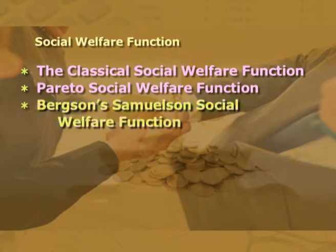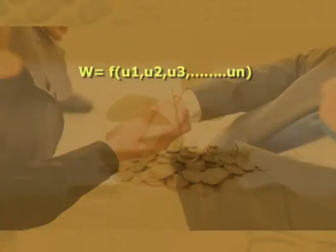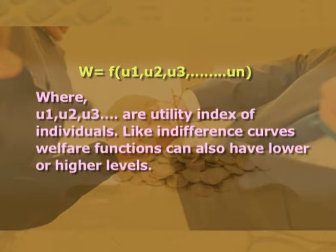Another is the Bergson-Samuelson social welfare function. As per A. Bergson, in an ordinal index of society's welfare, social welfare is the function of utility levels of all individuals in the society. Thus, it can be represented as W equals f(U1, U2, U3, ... UN), where U1, U2, U3 etc. are utility indices of individuals.